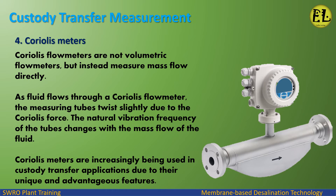Coriolis Meters: Coriolis flow meters are not volumetric flow meters, but instead measure mass flow directly. As fluid flows through a Coriolis flow meter, the measuring tubes twist slightly due to the Coriolis force. The natural vibration frequency of the tubes changes with the mass flow of the fluid. Coriolis Meters are increasingly being used in custody transfer applications due to their unique and advantageous features.